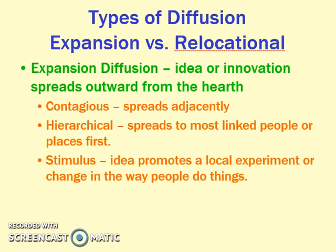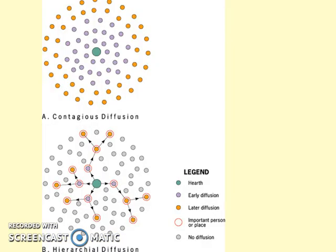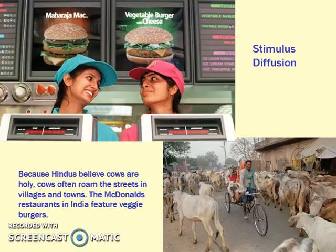With diffusion you have two main types: expansion and relocation. Relocation means people have to move, whereas expansion means the idea moves but people don't. Within expansion you have contagious, hierarchical, and stimulus diffusion. Contagious means it spreads to as many people as possible all at once, regardless of who they are. Hierarchical picks and chooses certain people first before spreading to others. Stimulus diffusion means the idea has to change before it can diffuse into other places — our classic example is McDonald's in India, where McDonald's had to change their product in order to be diffused into the Indian market.